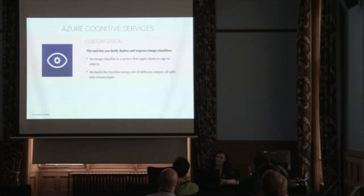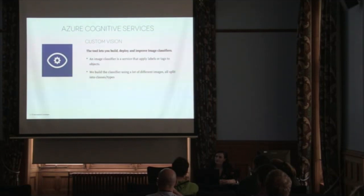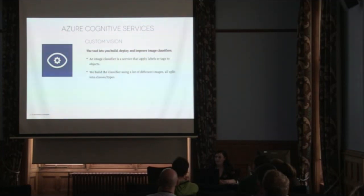The first one I started using was the Custom Vision API. This tool came out on April 2nd of this year, so it's fairly new. What it does is it lets you build, deploy, and improve image classifiers. It lets you actually train your data models before putting them into other services such as the Computer Vision service that Azure also lets you use with it.